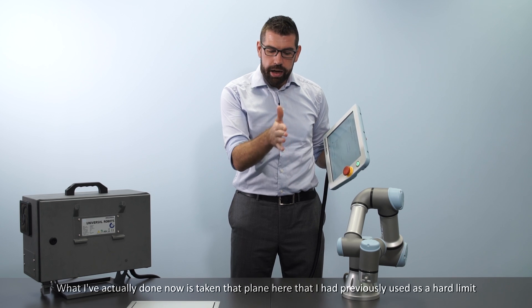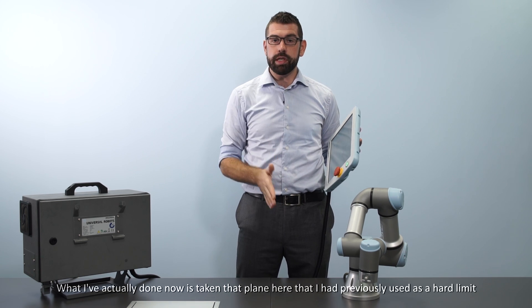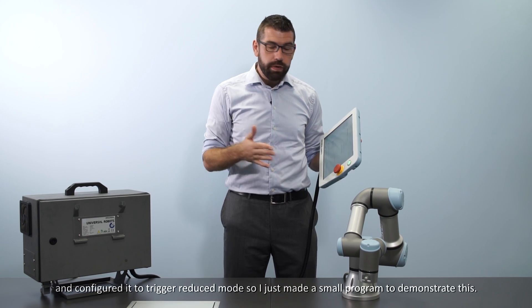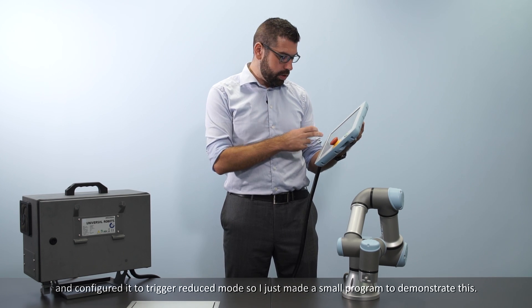So what I've actually done now is taken that plane here that I had previously used as a hard limit and configured it to trigger reduced mode. So I've just made a small program to demonstrate this.